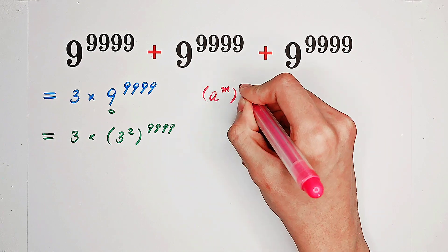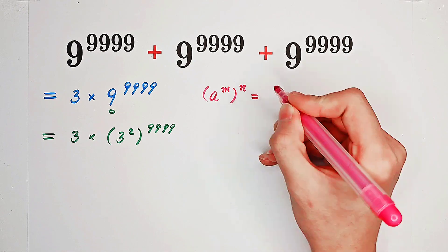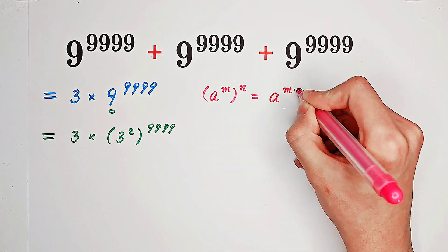Now, we use this formula. A to the power of m then also to the power of n is equal to A to the power of m times n.